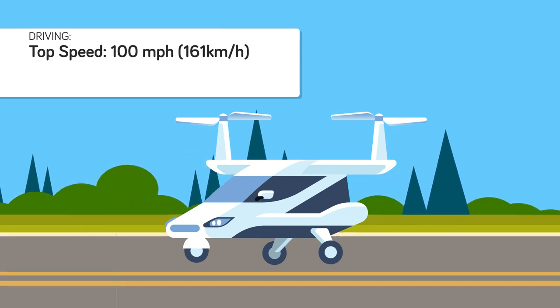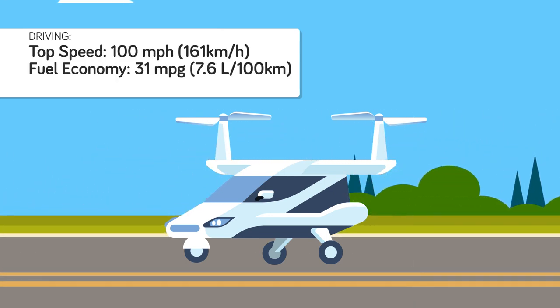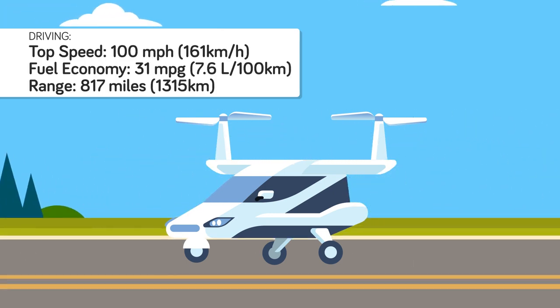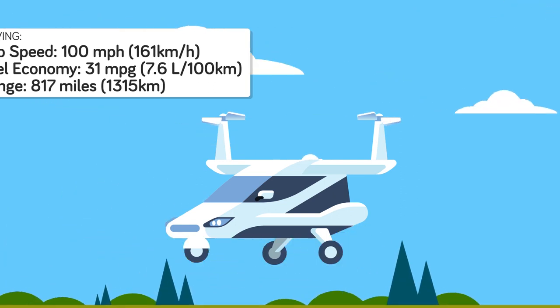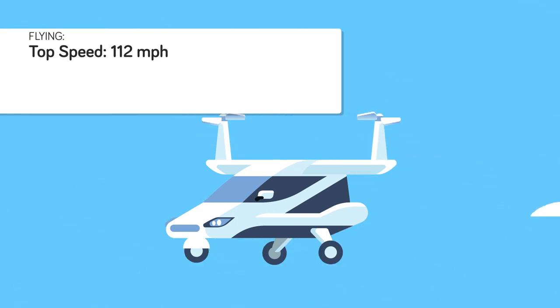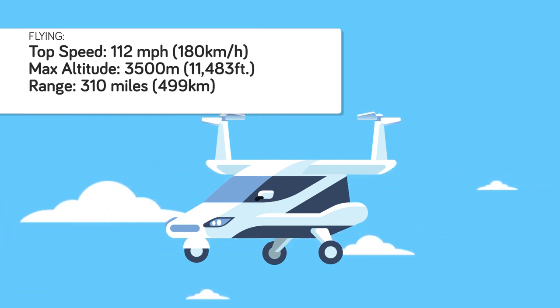On land, its top speed is 100 miles per hour and it has a fuel economy of 31 miles per gallon and a range of 817 miles. In the air, it has a top flying speed of 112 miles per hour and can reach a maximum altitude of 3500 meters and has a range of 310 miles.